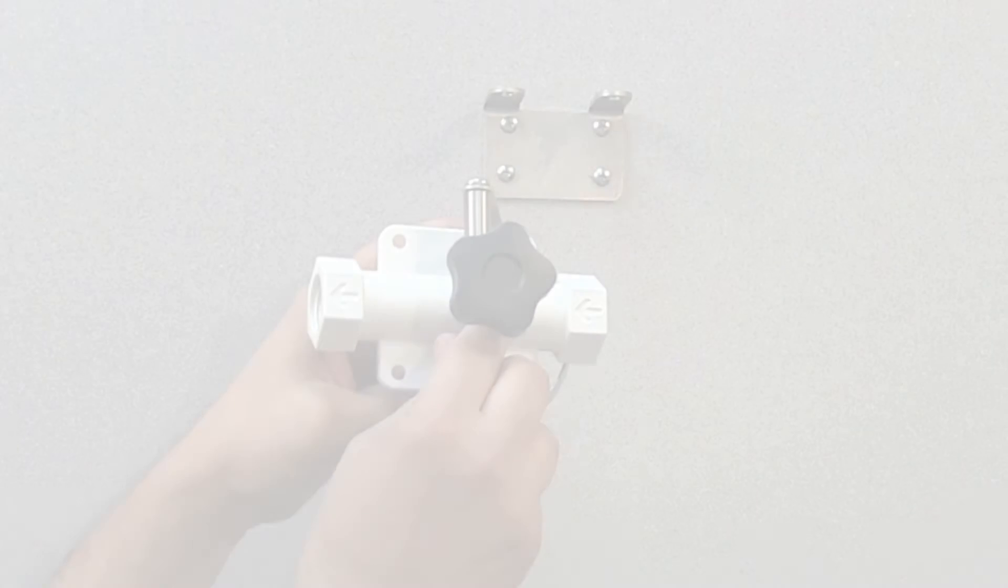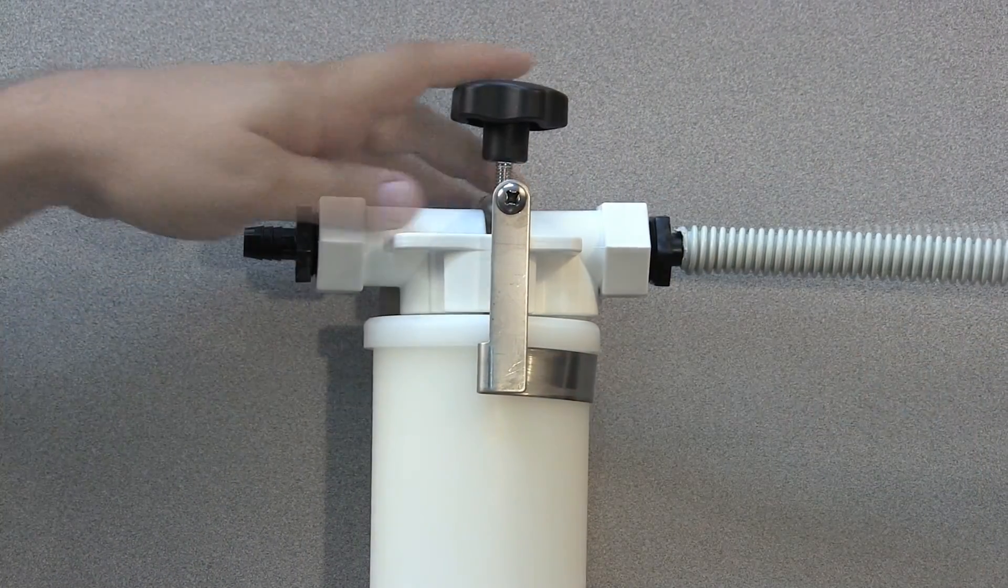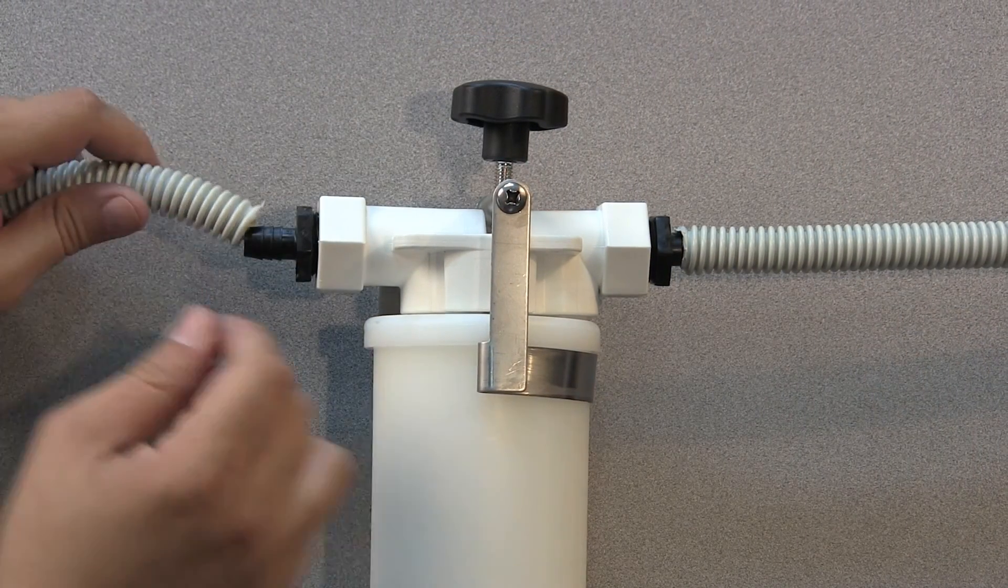Finally, observing the flow direction arrow on the manifold, connect the flexible vacuum hose you spliced to the barb connectors and you're finished! To replace the filter, simply loosen the knob on the retaining bracket and pull the filter assembly away from the manifold.